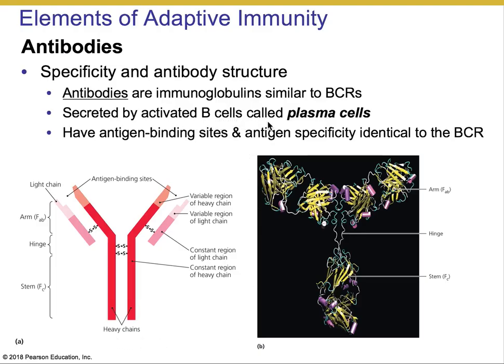They make and then secrete these antibodies into the fluids and serum to fight infections. They have antigen binding sites with specificity identical to the B cell receptor present on the cell that produced them. I want to draw attention to these tails — later on, we'll see that they do serve a function, even though they're not involved in actually binding to antigen.